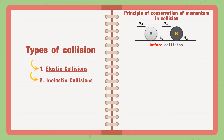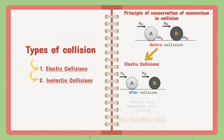Before the collision, as you can see, there are two objects with two different initial velocities moving in the same direction. After the collision, the first case that could happen is elastic collision. Elastic collision means both objects A and B move separately after the collision. Since total momentum before equals total momentum after, the formula will look like this.